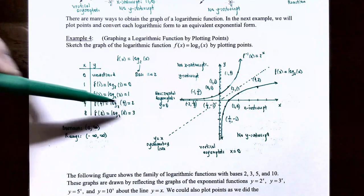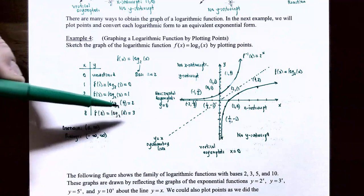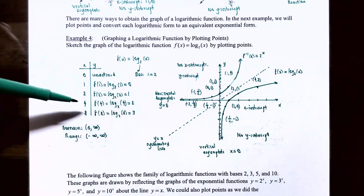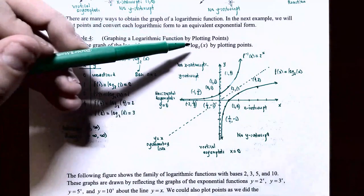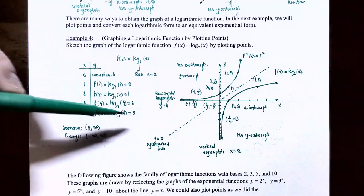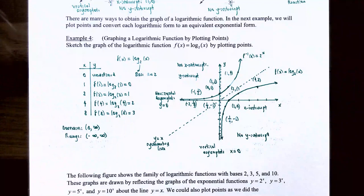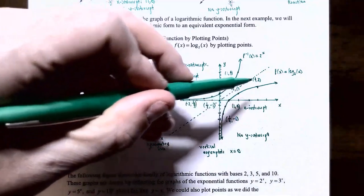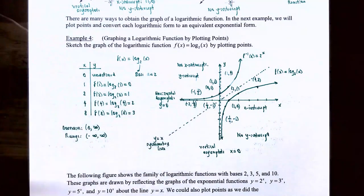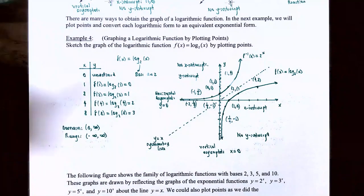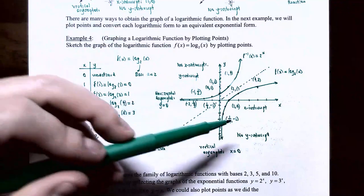When x equals 4, f of 4 is log base 2 of 4 — the exponent on base 2 that gives 4 is 2, since 2 squared equals 4. So log base 2 of 4 is 2, giving the point 4 comma 2. When x equals 8, log base 2 of 8 — the exponent must be 3 since 2 cubed equals 8, giving the point 8 comma 3. Additional points include 1 half comma negative 1, since 2 to the negative 1 equals 1 half, and 1 fourth comma negative 2, since 2 to the negative 2 equals 1 fourth.